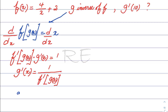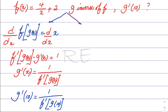Similarly, g prime of 10 will be 1 over f prime of g of 10. g being the inverse of f also means that if g of x is 10, then f — swapping x for y — will be the unknown comma 10. We can see clearly that 10 is f of x.